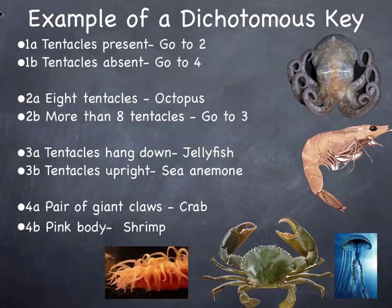Let's look at the top right one. Austin, what were your choices? I did 1A — tentacles present. Then 2A — has eight tentacles. Yes, it's an octopus. How about this one? I did 1B — tentacles absent. Then 4B — pink body. Yes, that's a shrimp.